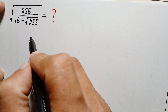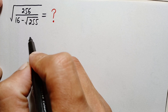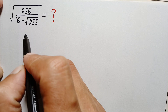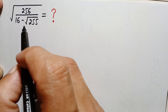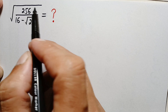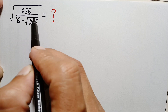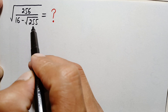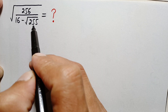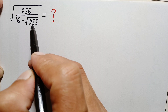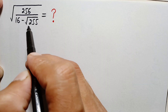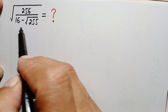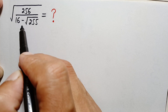Hello everyone, you are welcome. Today we have a very interesting square root math problem, which is the whole square root of 256 divided by 16 minus square root of 255. I will try to solve and simplify this beautiful square root math problem. Let's start our solution.